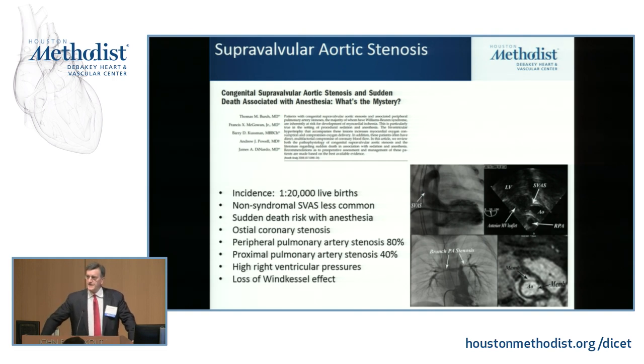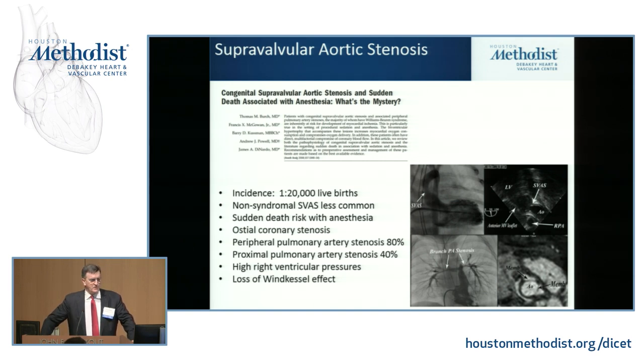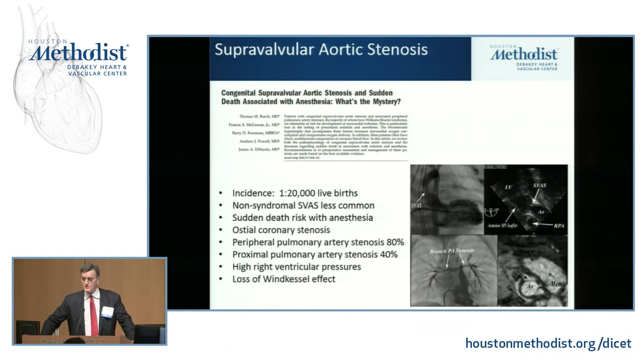A very common concern with these patients is that they are at high risk of sudden death when they have procedures, particularly when they have anesthesia. That's related not only to the supravalvular aortic stenosis, but also associated lesions, including coronary ostial stenosis. About 80% of these patients will have peripheral pulmonary artery stenosis, and 40% will have proximal pulmonary artery stenosis, which can cause significant right ventricular hypertension.